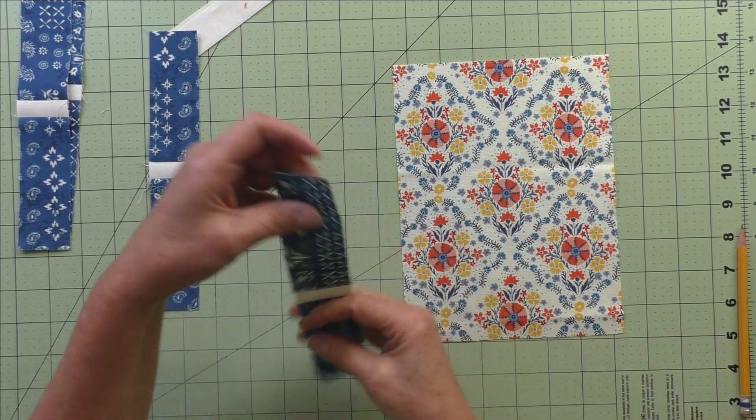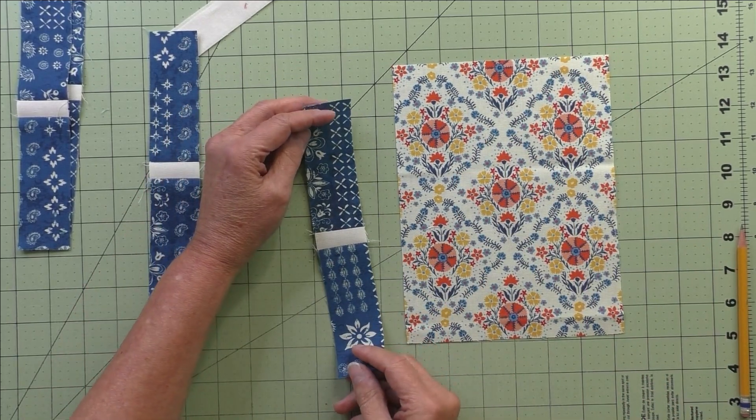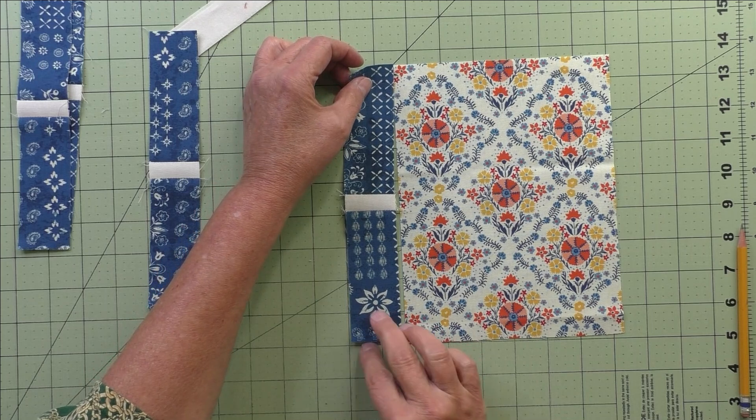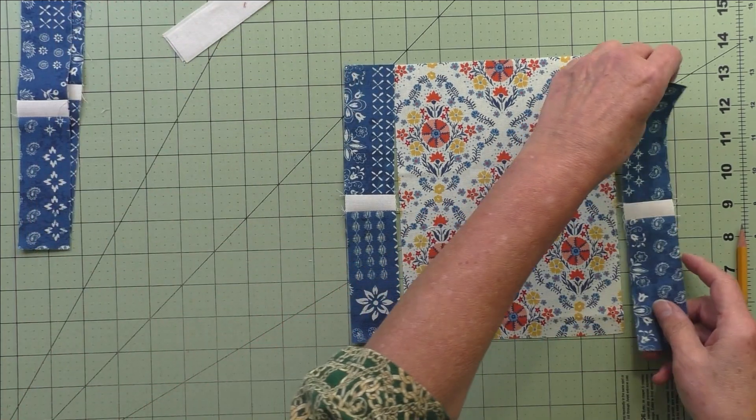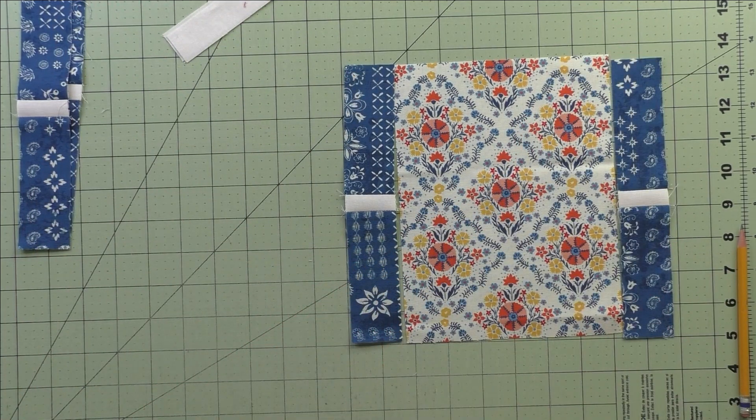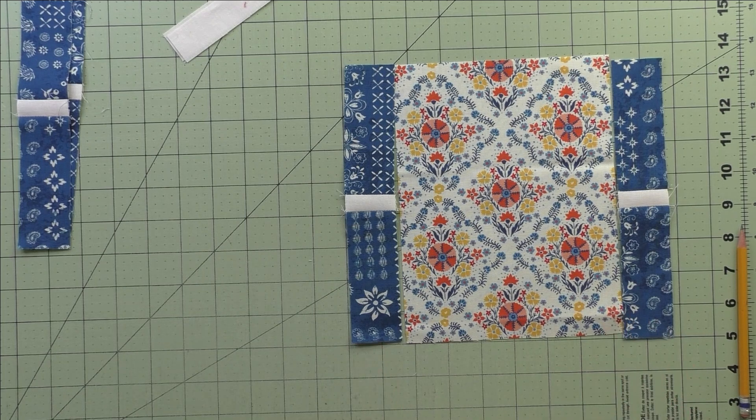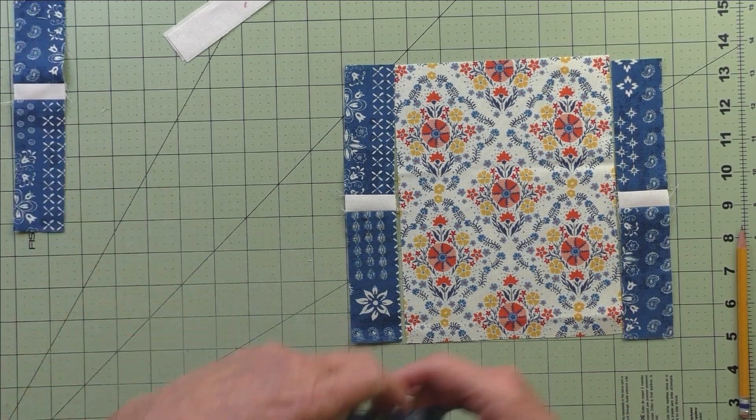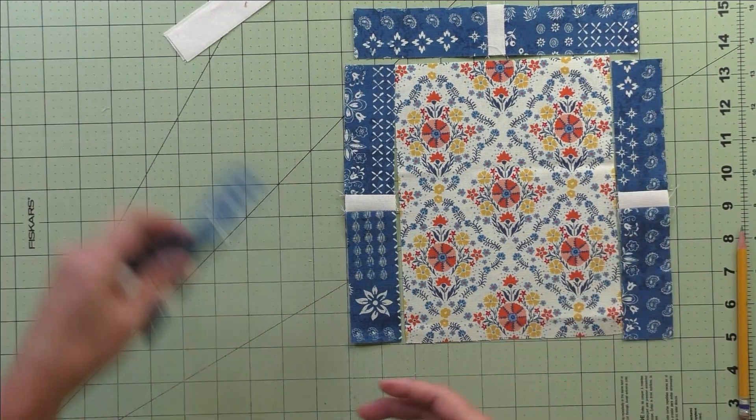Now, with these units from step one, we're going to sew one on each side of this Patch D and press the seams open. After that, we'll sew one to the top and one to the bottom and press the seams open.